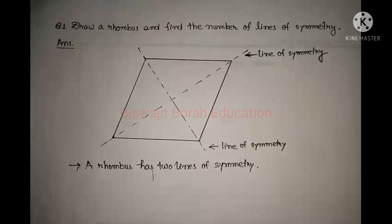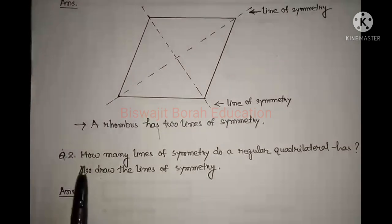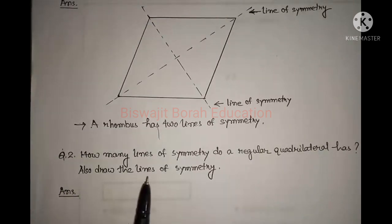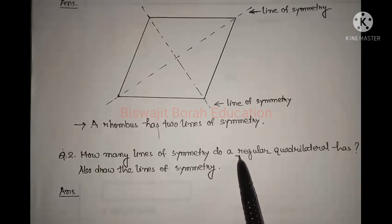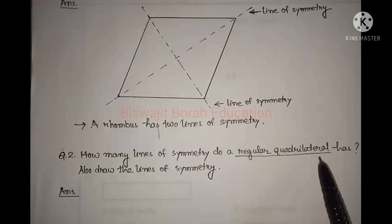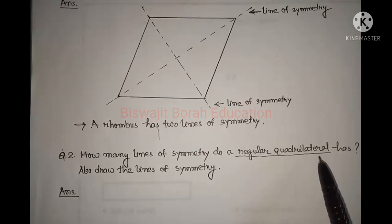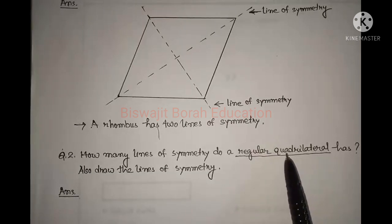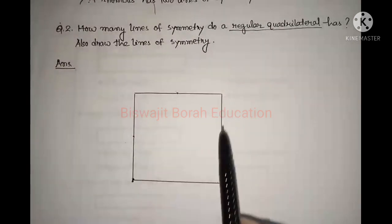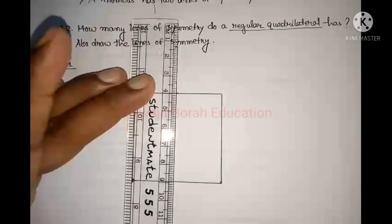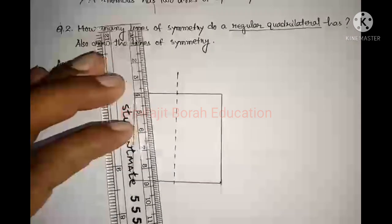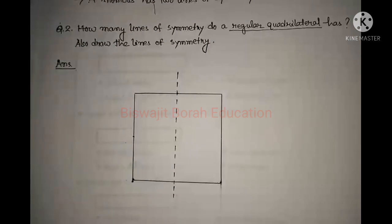Question number two: how many lines of symmetry does a regular quadrilateral have? Also draw the lines of symmetry. A regular quadrilateral is a square — all sides are equal. So square is a regular quadrilateral. A line of symmetry is a line which divides an object or a geometrical figure into two equal parts.